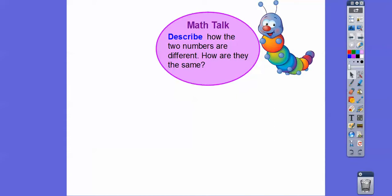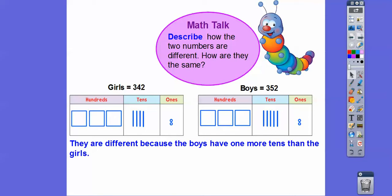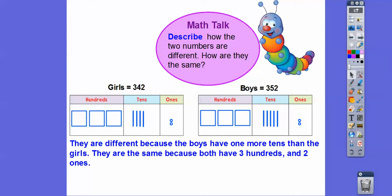Describe how the two numbers are different and how they're the same. It looks like they're different only in the tens column. The girls has four tens, the boys has five tens. So they're different because the boys have one more ten than the girls. And they're the same because they both have three hundreds and two ones.